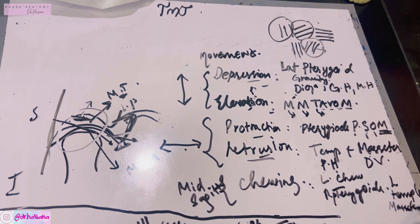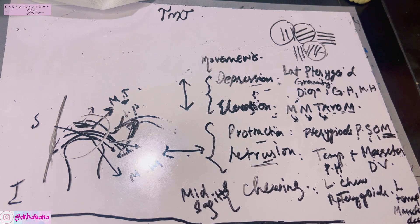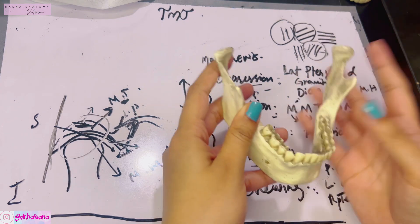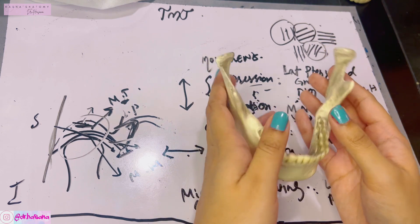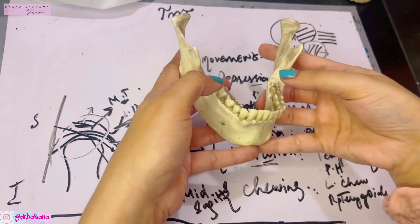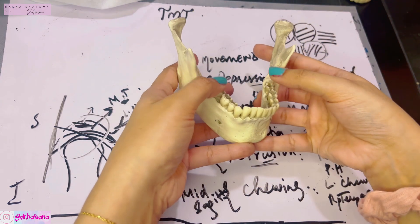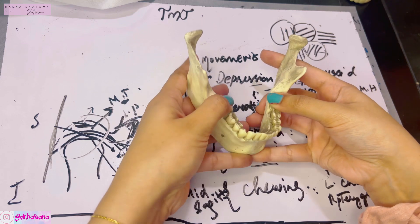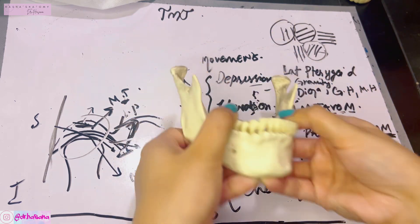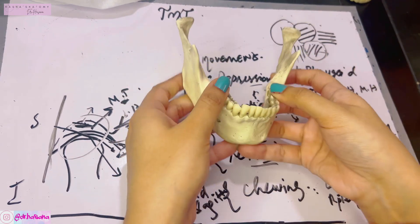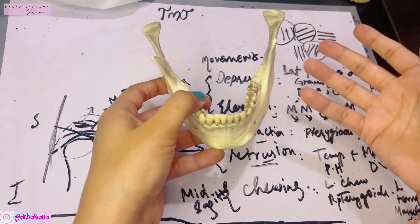An important clinical point about the TMJ relates to mandibular dislocation. To reduce a mandibular dislocation, place your thumbs on the last molar teeth, cause depression of the mandible, and simultaneously pull the chin forwards — that is how you reduce the dislocation.